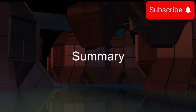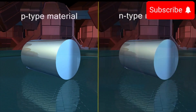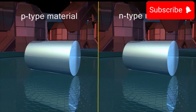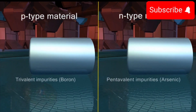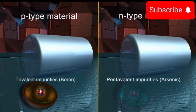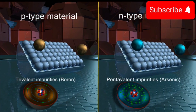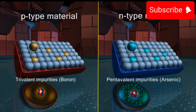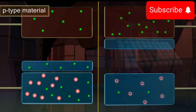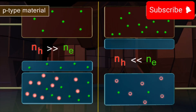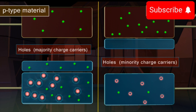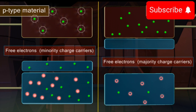Summary: The P-type and N-type semiconductors are obtained by doping of a pure semiconductor with trivalent and pentavalent impurities, respectively. In the P-type material, NH is extremely greater than NE. The holes are the majority charge carriers and free electrons are the minority charge carriers.